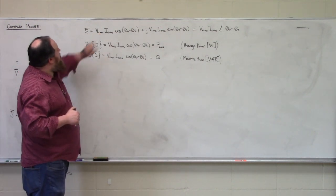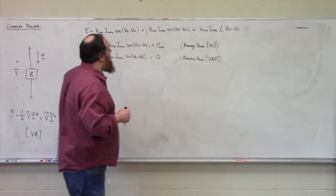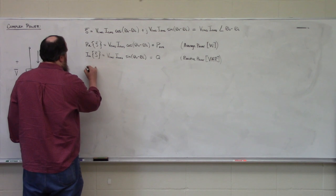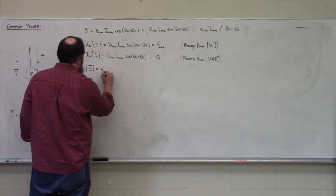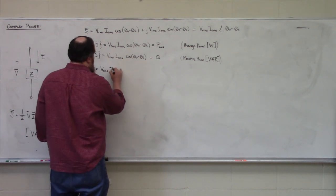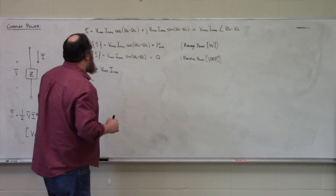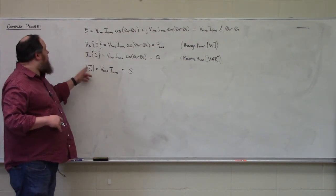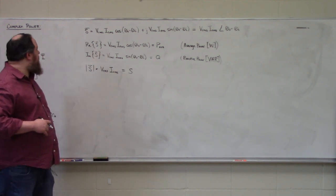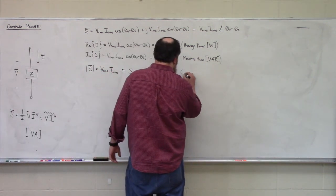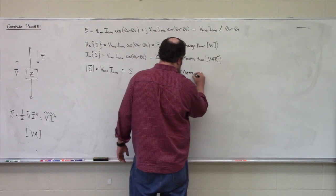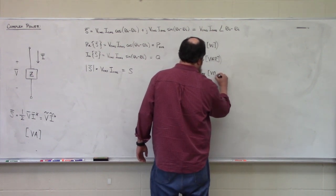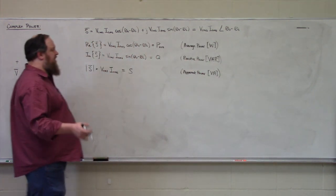Moving to the magnitude of the polar form: Vrms multiplied by Irms is called S, the apparent power. Note that this S without a bar represents the magnitude of complex power. Apparent power is also measured in volt-amperes. You may see apparent power when shopping for items like an uninterruptible power supply rated for, say, 2 kVA with 1800 watts.